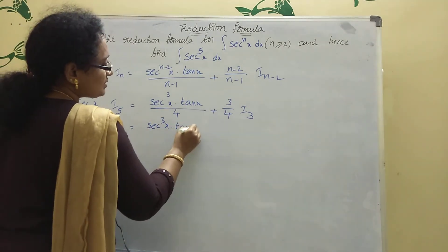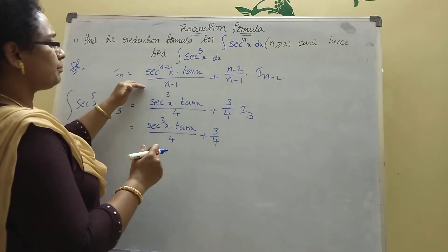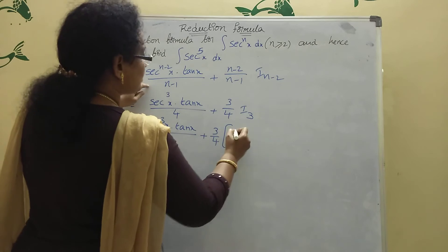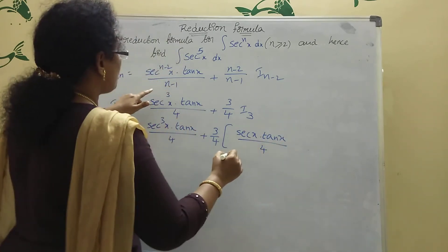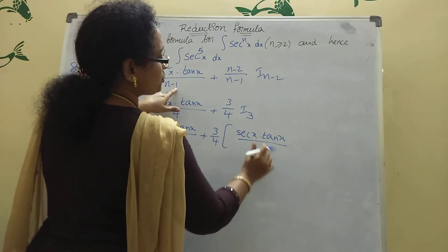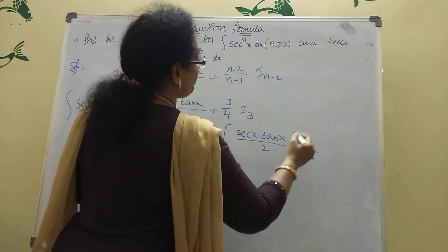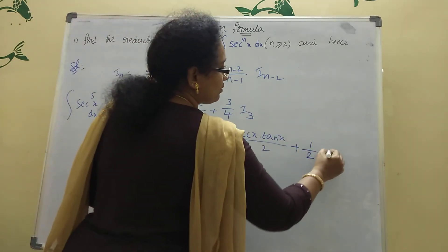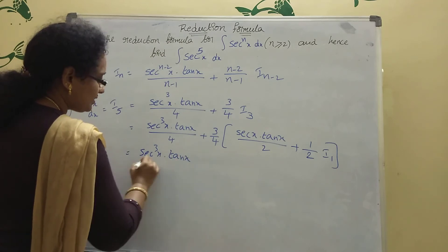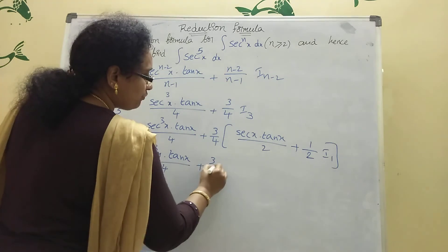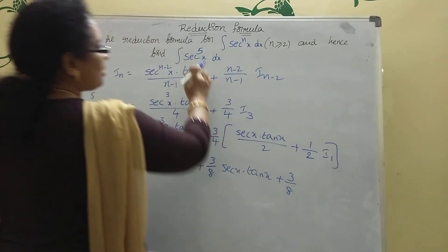So I_5 equals secant cubed x into tan x divided by 4, plus 3 by 4 times I_3. Now for I_3, applying the formula with n equal to 3: secant power (3 minus 2) x = secant x, into tan x divided by (3 minus 1) = 2, plus (3 minus 2) = 1 divided by 2 times I_1. So I_3 equals secant x into tan x divided by 2, plus 1 by 2 times I_1. Substituting back: I_5 equals secant cubed x into tan x divided by 4, plus 3 by 4 into secant x into tan x divided by 2 plus 3 by 8 times I_1.